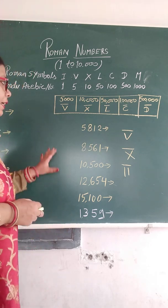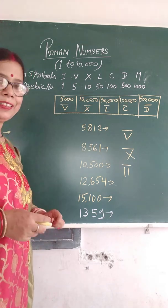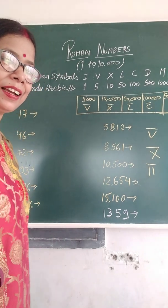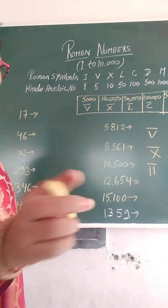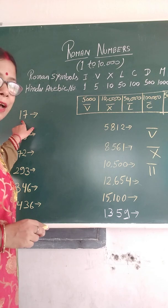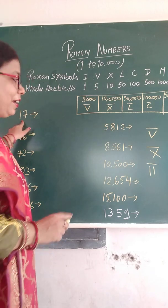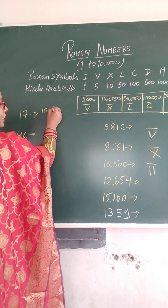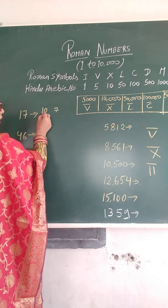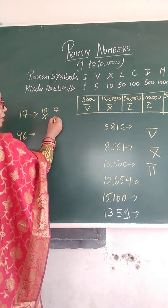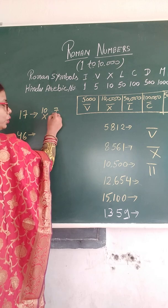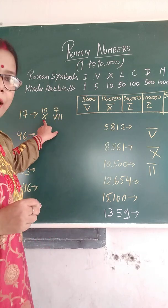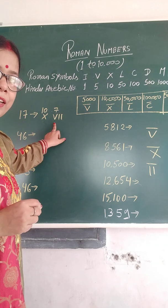Now this number — how to solve it? Here we have 17. This will be 10 plus 7. So 10 is X. And 7 is 5 plus 2 — V and then 2 I's. So 17 is XVII.